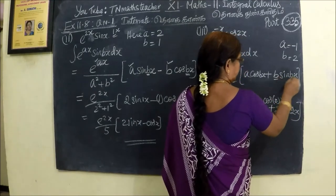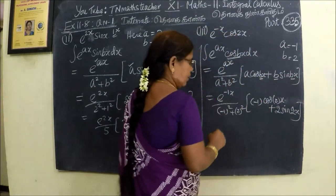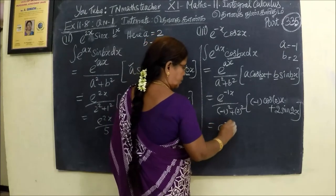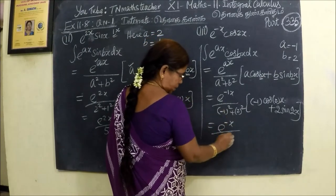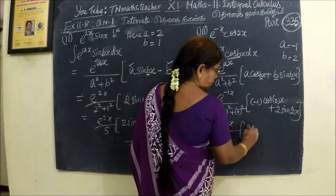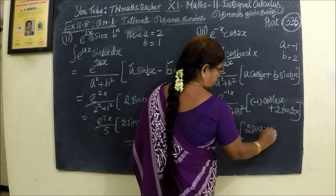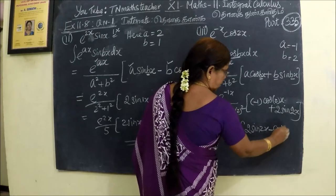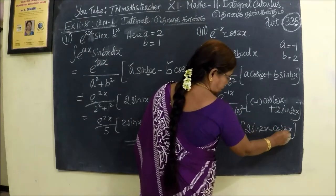So e power minus x, then 5. Apply the first step, 2 sides, 2x minus cos 2x. This is the second step.